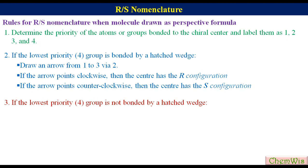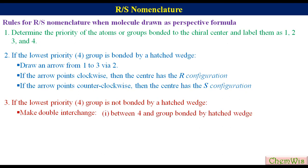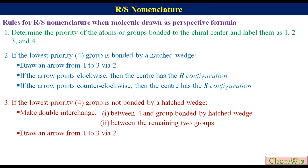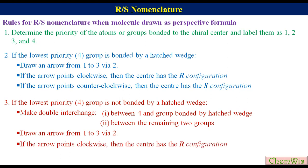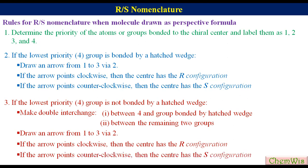If the lowest priority group is not bonded by a hatched wedge, then make a double interchange: first between 4 and the group bonded by a hatched wedge, and second between the remaining two groups. Draw an arrow from 1 to 3 via 2. If the arrow points clockwise then the center has R configuration; if counter clockwise then the center has S configuration.